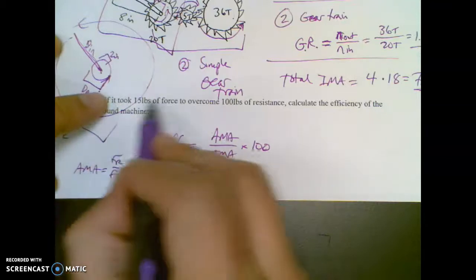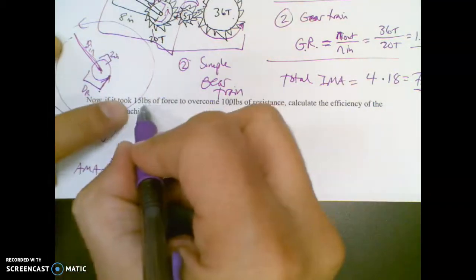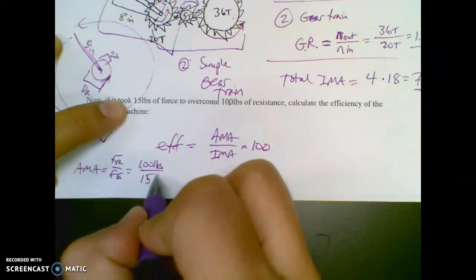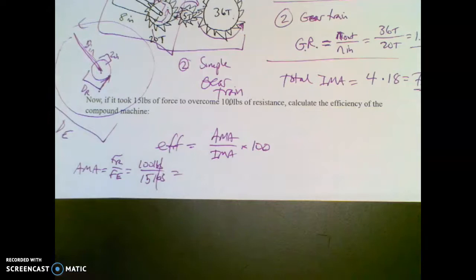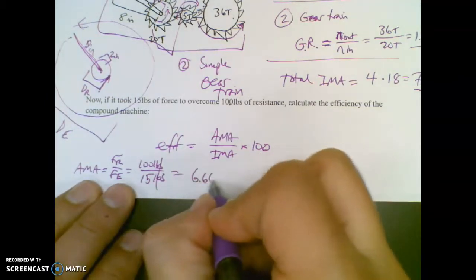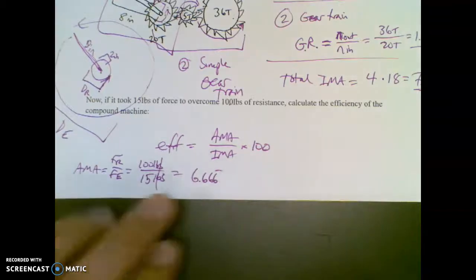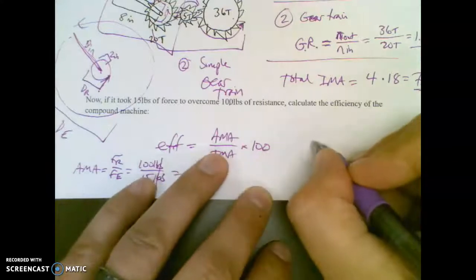So off to the side here, I'm going to say AMA equals FR over FE. What's my force resistance? 100 pounds. What's my force effort? 15 pounds. Pounds cancels with pounds, then you get 100 divided by 15. Now that's 6.66666 repeating. Keep extra decimal places.